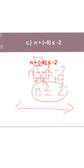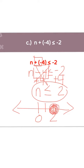Now draw your number line with 0 and the number 2. Put the circle at the 2. The sign is less than or equal to — since it can equal 2, it is a closed circle. Since it is less than, the arrow goes to the left. Your answer is a closed circle at 2 with an arrow pointing to the left.